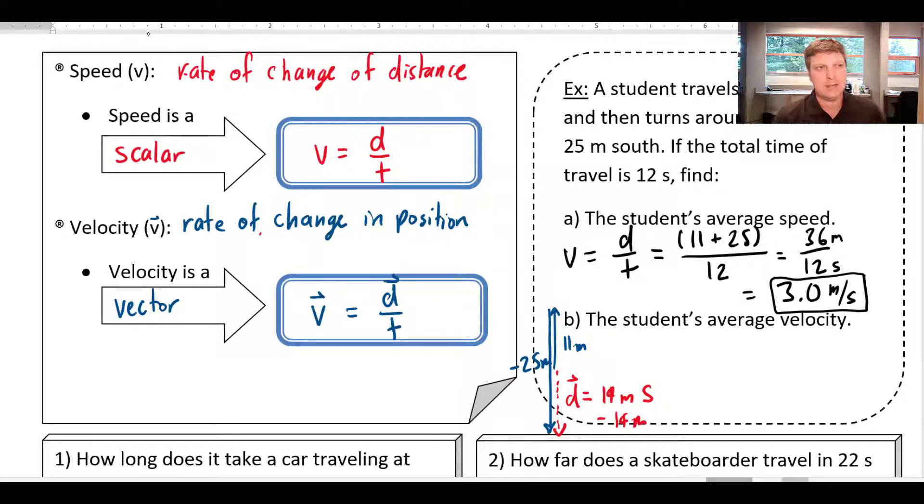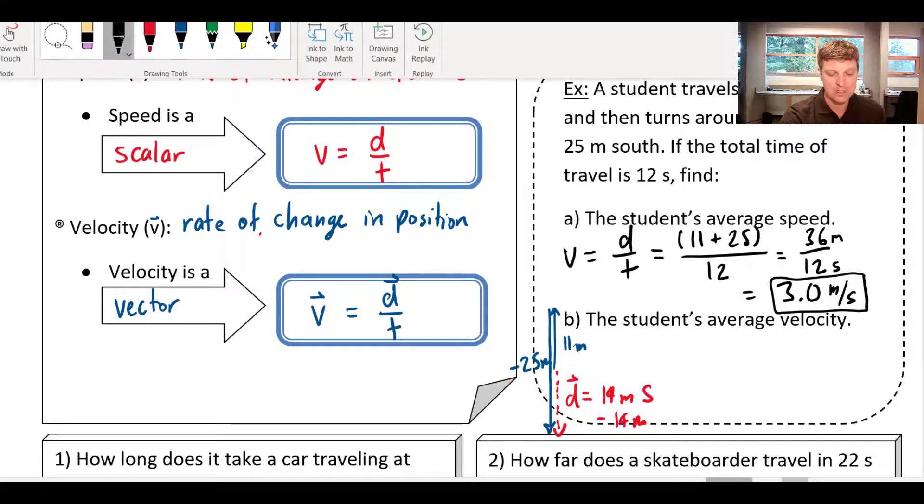Now, putting south into an equation is kind of challenging, but putting a negative sign into an equation is pretty easy. So I'm going to usually default to using positive and negative whenever I want to indicate direction. That's going to work great in one dimension.